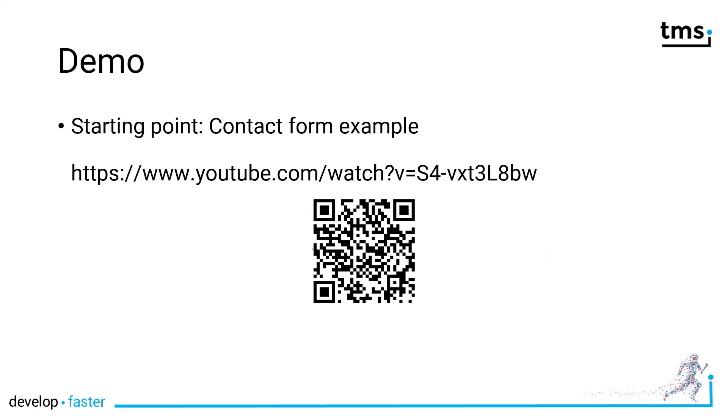As a starting point for the demonstration, I'm going to use the contact form example created in another video. The contact form allows you to fill in user information and then send an email. It's published on YouTube — use the QR code on screen to find it quickly. That QR code, as an aside, was created with a TMS WX Packer control, which also supports barcodes, a PDF viewer, and other multi-platform components. But now back to TMS Miletus and writing software for the Raspberry Pi.